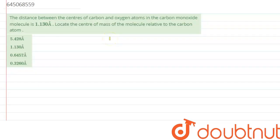Hi everyone, so we are given with the question which says the distance between the centers of carbon and oxygen atom in carbon monoxide molecule is given as 1.130 angstrom.